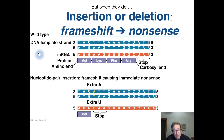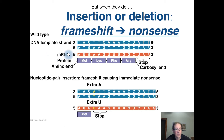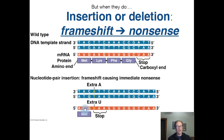In this example of a frameshift mutation, an extra A has been inserted into the DNA sequence. When that gets translated to mRNA, we go from a codon that originally coded for lysine to a codon that now codes for stop. So in this case, the frameshift has caused immediate nonsense — a premature stop codon. A frameshift mutation can therefore lead to a nonsense mutation.